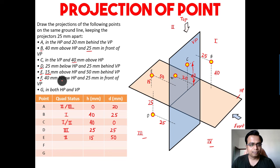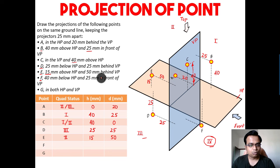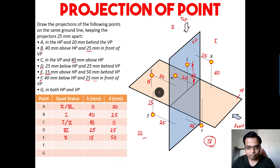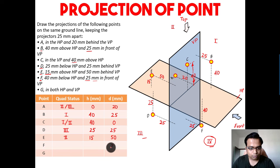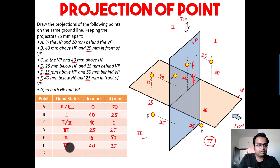Point F: 40mm below HP and 25mm in front of the VP. Below HP means third or fourth quadrant. In front of the VP means it's clearly the fourth quadrant. So h equals 40 below HP and d equals 25 in front of VP — a clear-cut case of a point in the fourth quadrant.